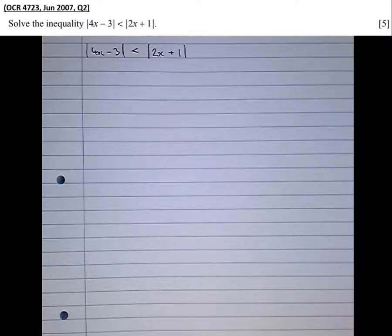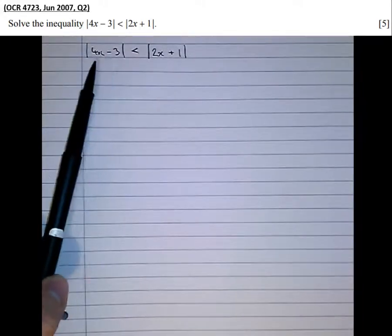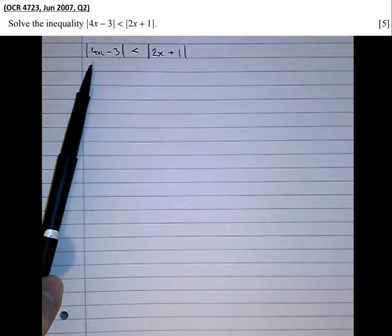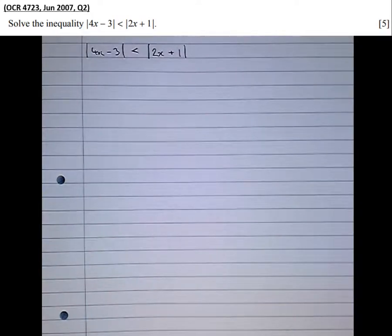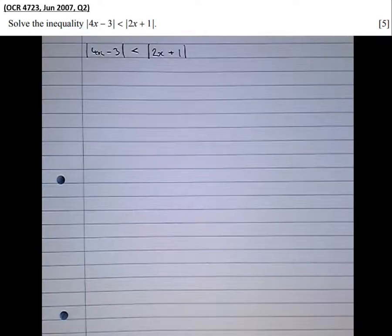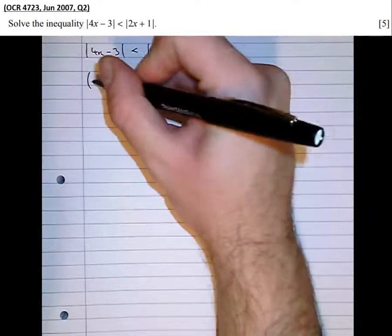That can be bad news for questions like this. But notice that what's on the left hand side is positive because it involves a modulus sign, and what's on the right hand side is positive because it involves a modulus sign. Therefore, we're times-ing both sides by themselves — we're times-ing both sides by a positive number. No need to flip the inequality. So let's square both sides.